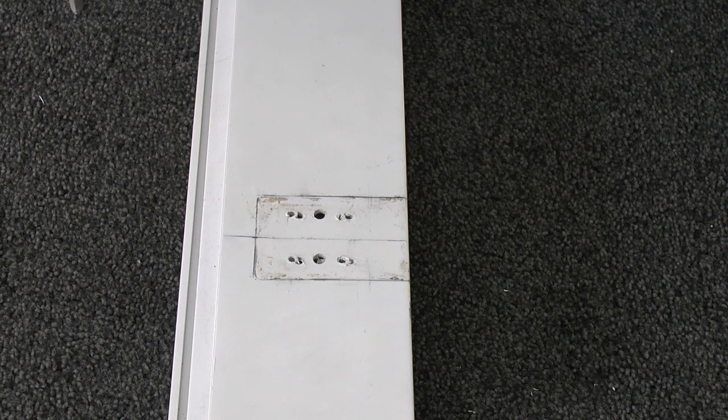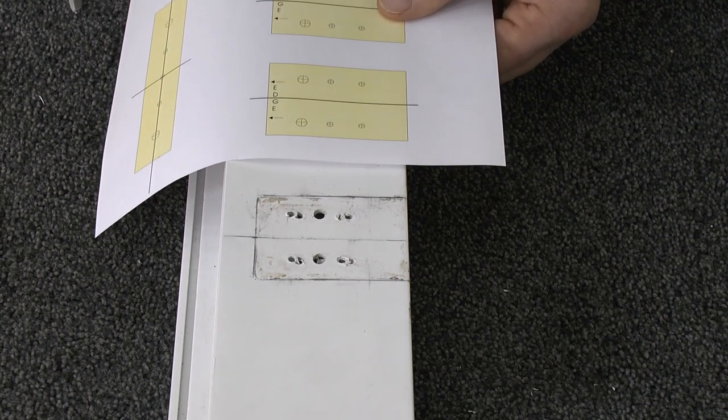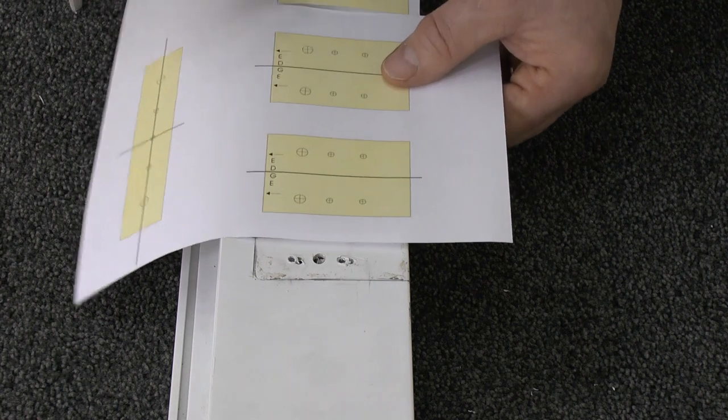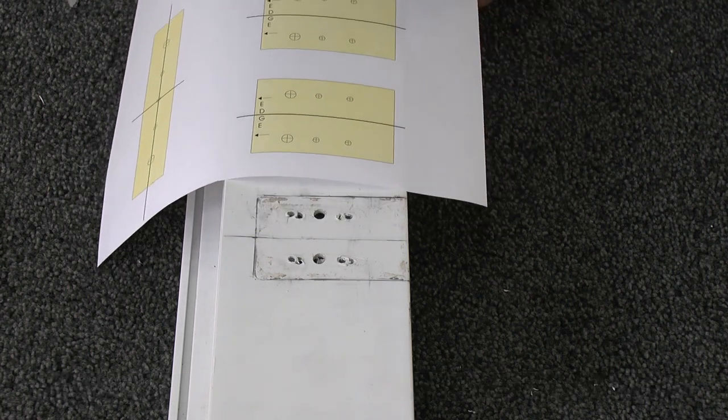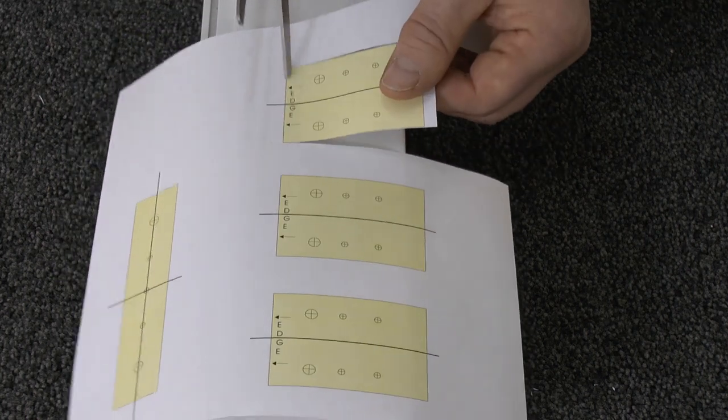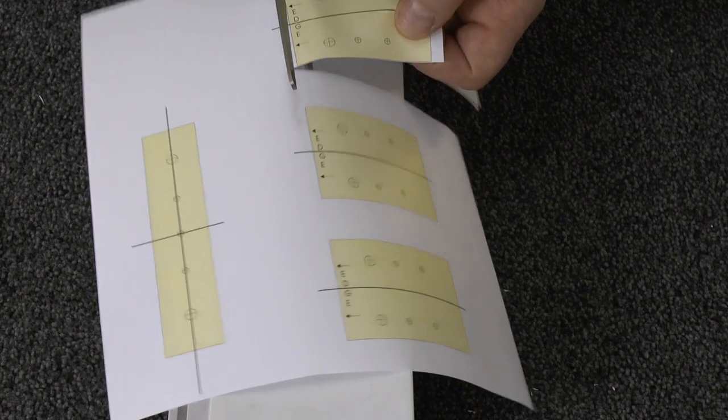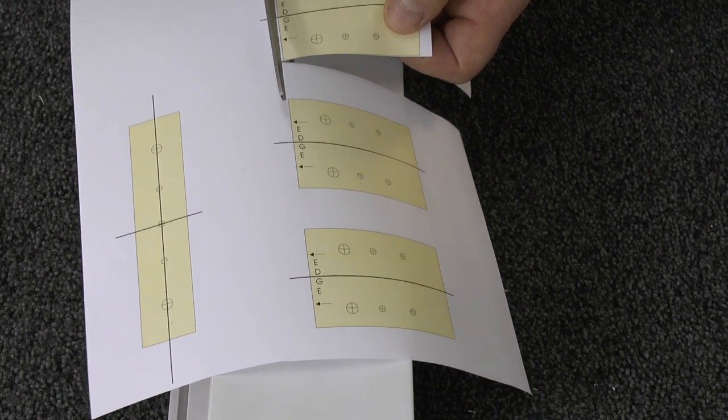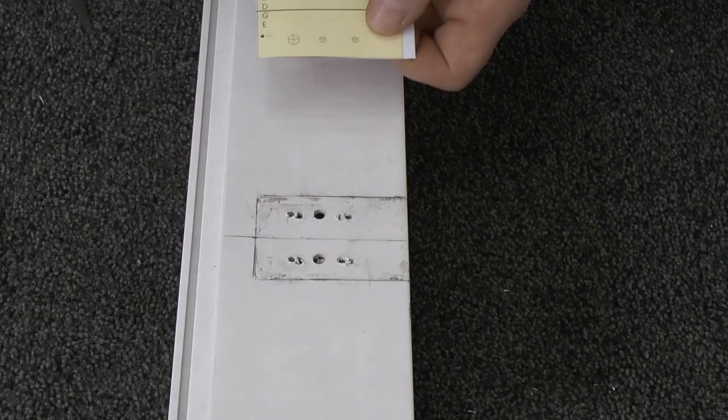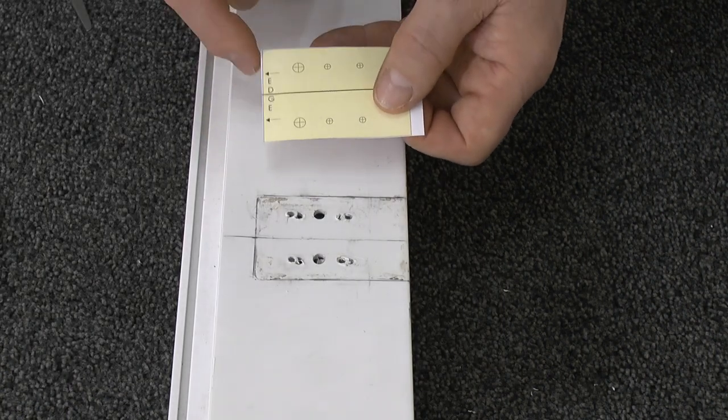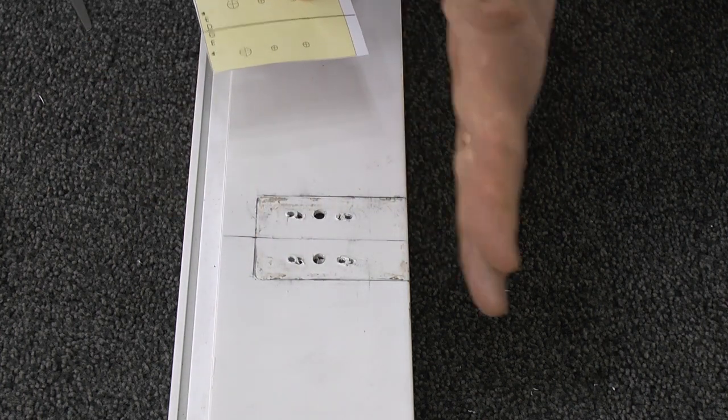We've cleaned off the burrs and we've now got to introduce the template. The template will come with three of them available for each of the hinges. Where the word edge is cut, the template level with the edge indicated.